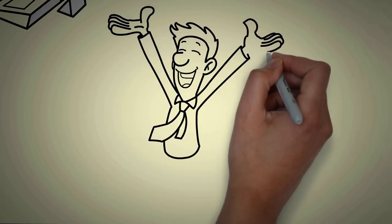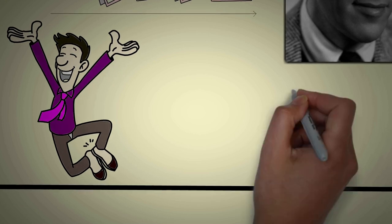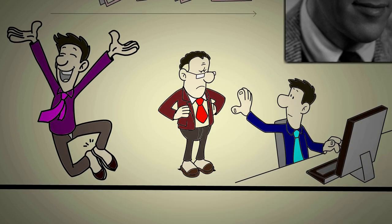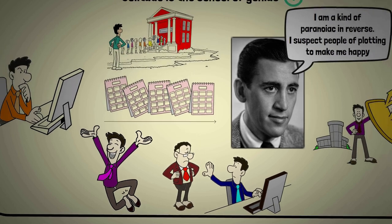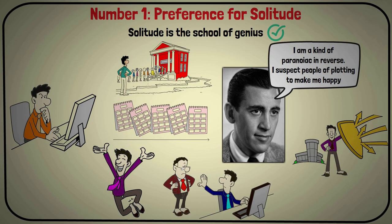Solitude is key for Sigma males. They prefer to be alone and don't need the approval of others to feel content. It's this preference for privacy that makes them so private.